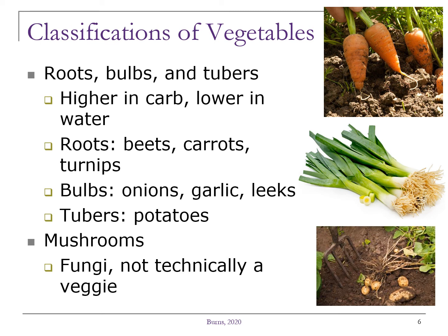The final category are those plant parts that are grown underground — the roots, the bulbs, and the tubers. These tend to be higher in carbohydrate and lower in water. Beets, carrots, and turnips are roots of the plant, while onions, garlic, and leeks are bulbs. Potatoes and sweet potatoes are considered tubers.